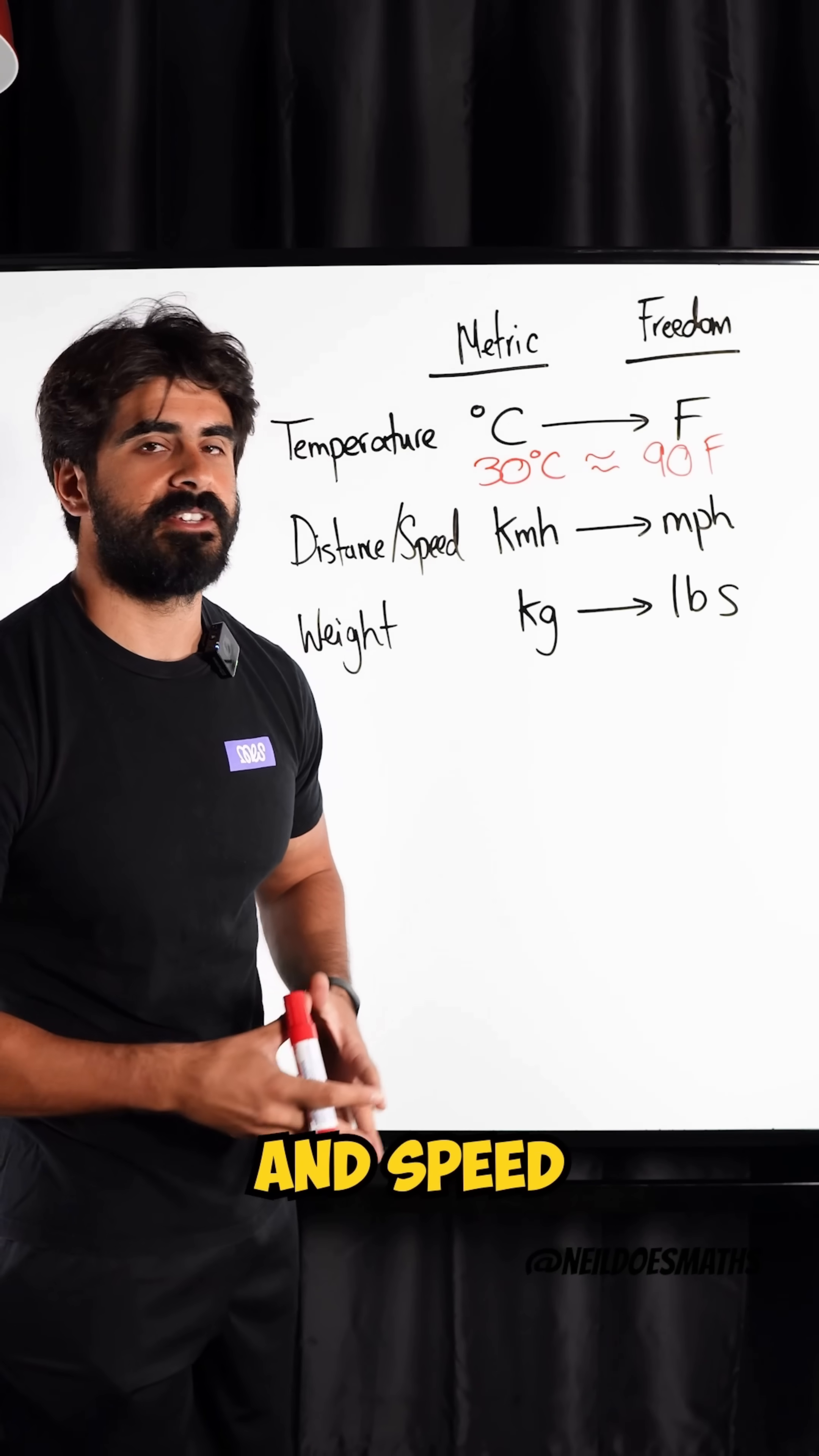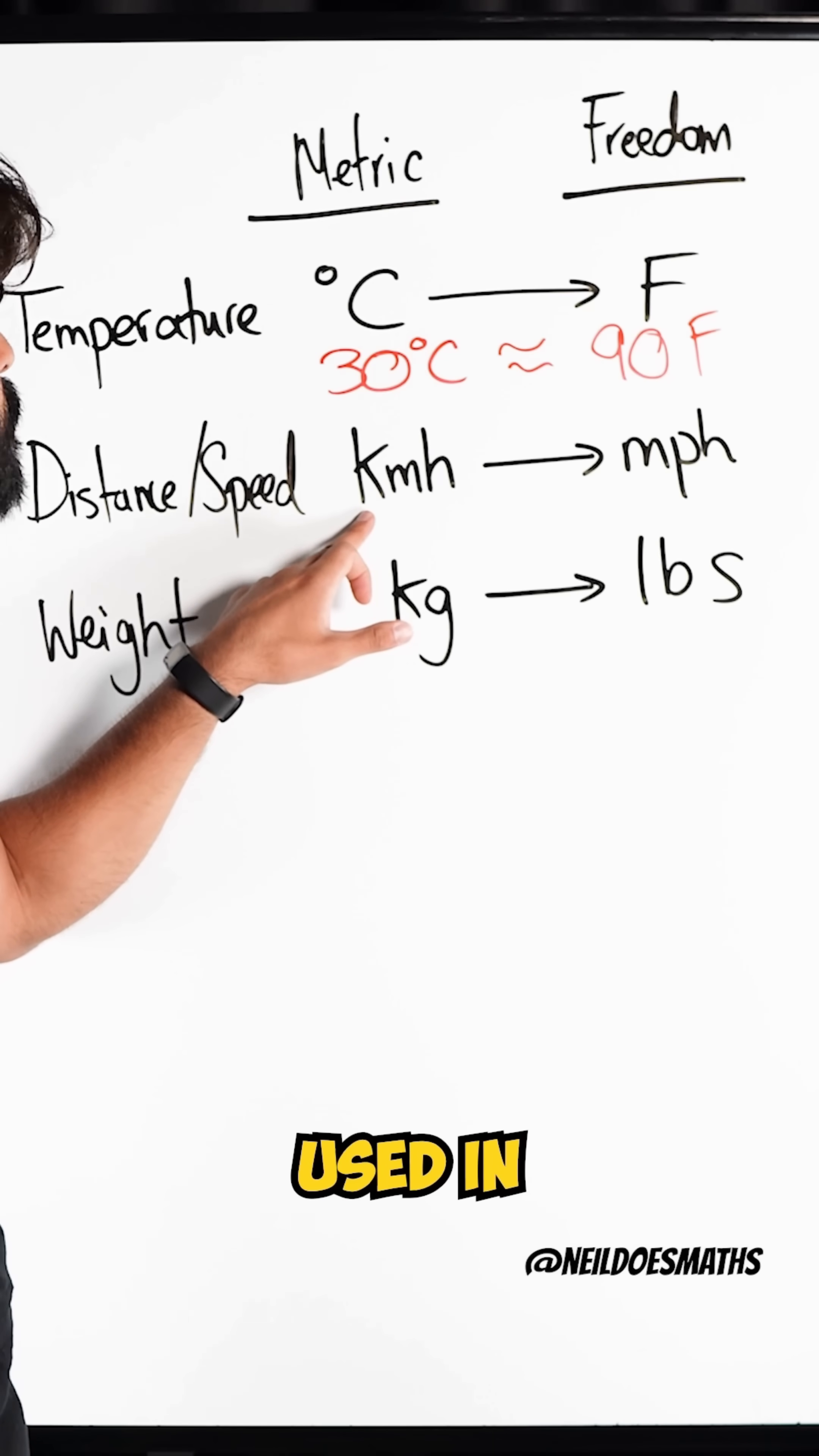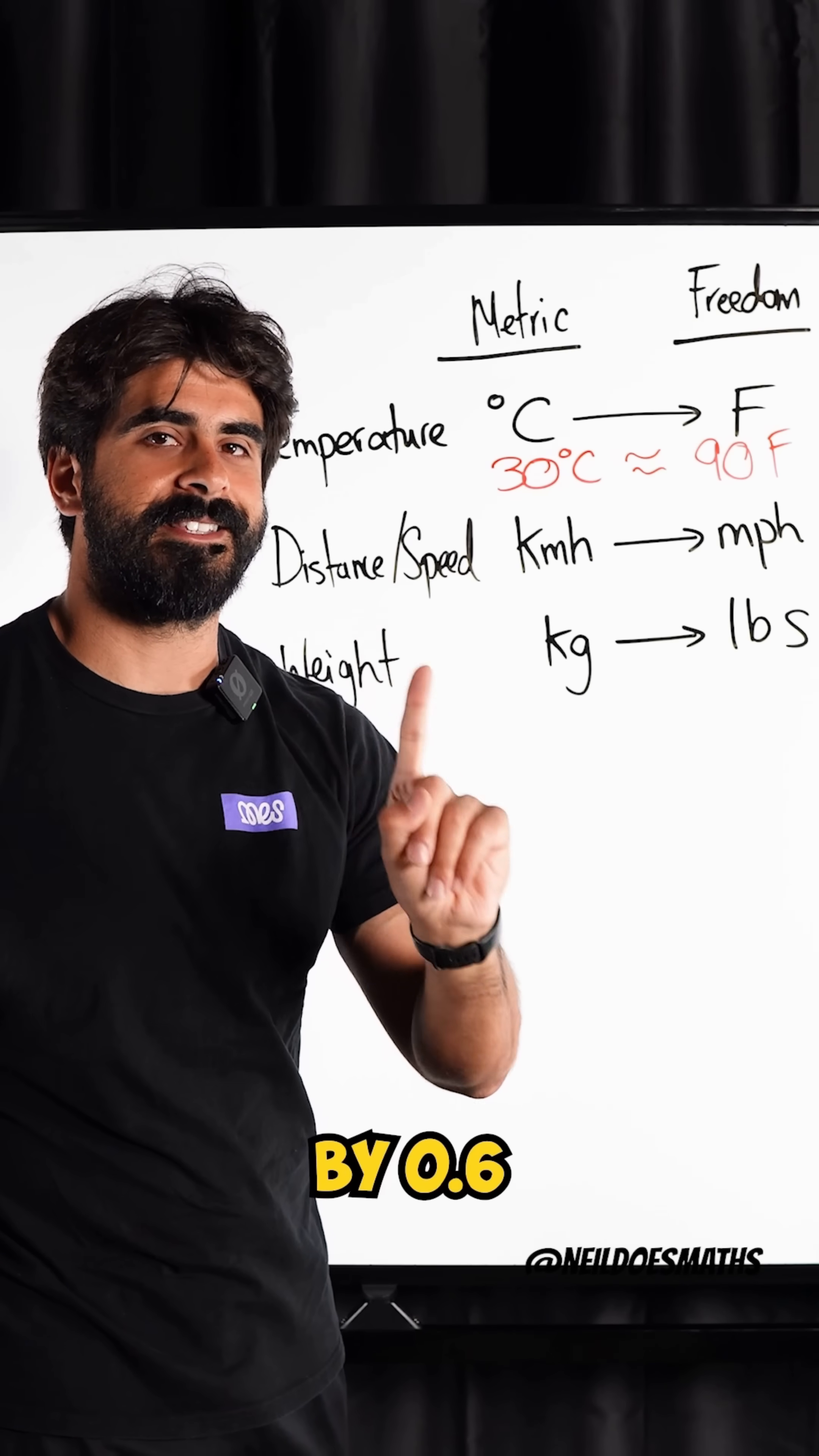The next one is distance and speed. Now the conversion is going to be the same because you're just affecting the numerator here. So to go from kilometers per hour used in Europe to miles per hour, freedom units, very simple. Just multiply it by 0.6.